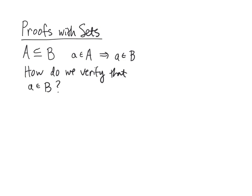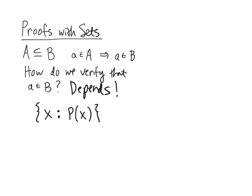This depends on how our set B is presented to us. There are two common situations, and I'll talk about a third in a minute. Generally, you specify a set by saying it's the set of elements satisfying some property given by an open sentence P(x), or more specifically, you say it's the elements in a pre-existing set S such that P(x) holds.